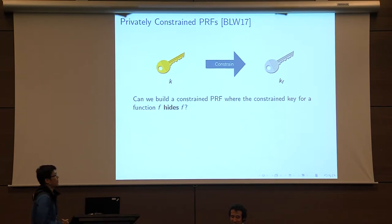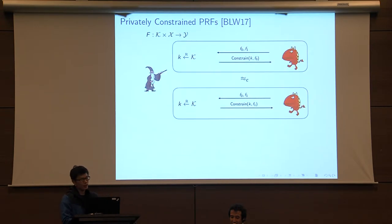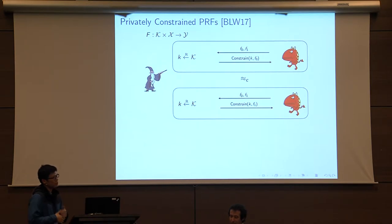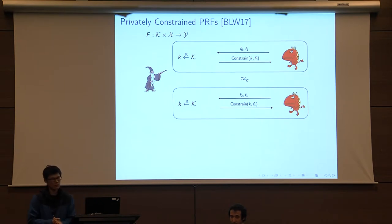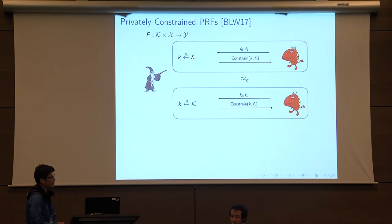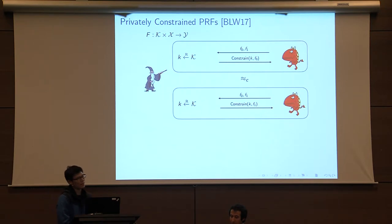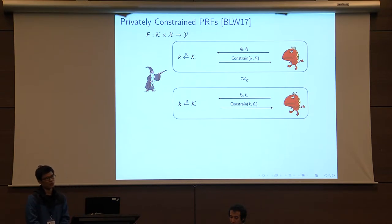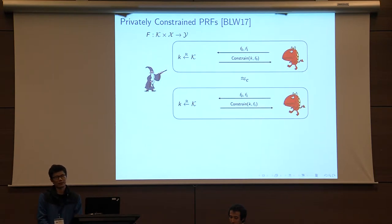This is the question that Bonet et al. asked recently. We formalize this notion via a security game where an adversary first commits to a pair of functions f0 and f1 — these are constrained functions. In the first game, the challenger generates a constrained key with respect to f0; in the second game, with respect to f1. The privacy requirement states that these two distributions should be indistinguishable.